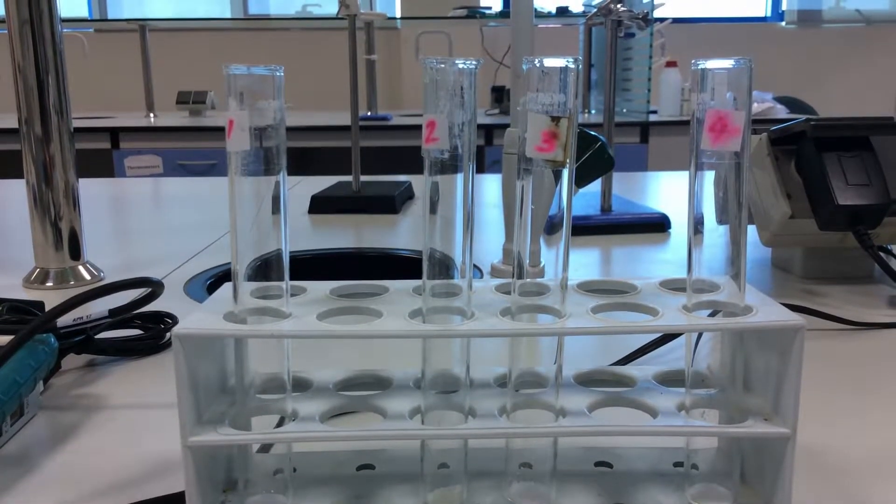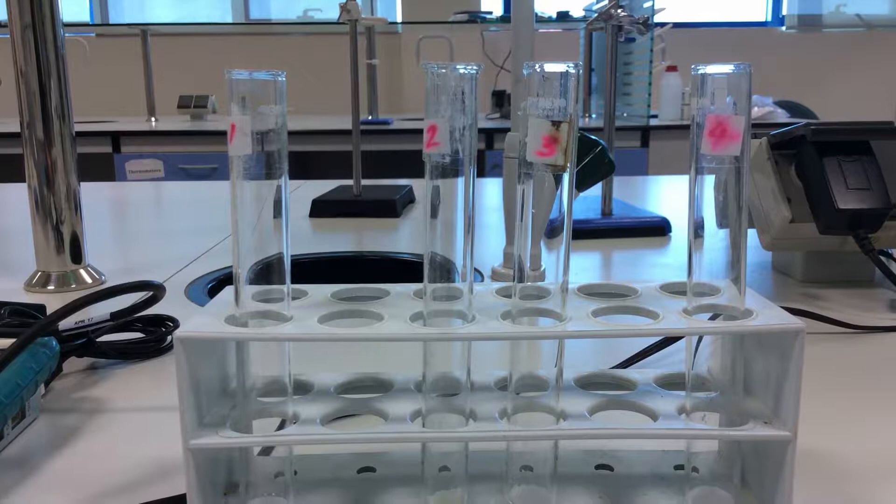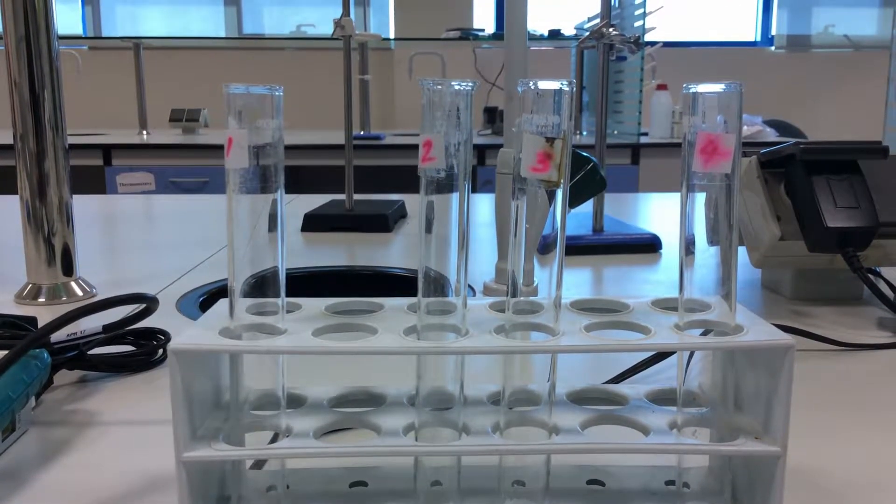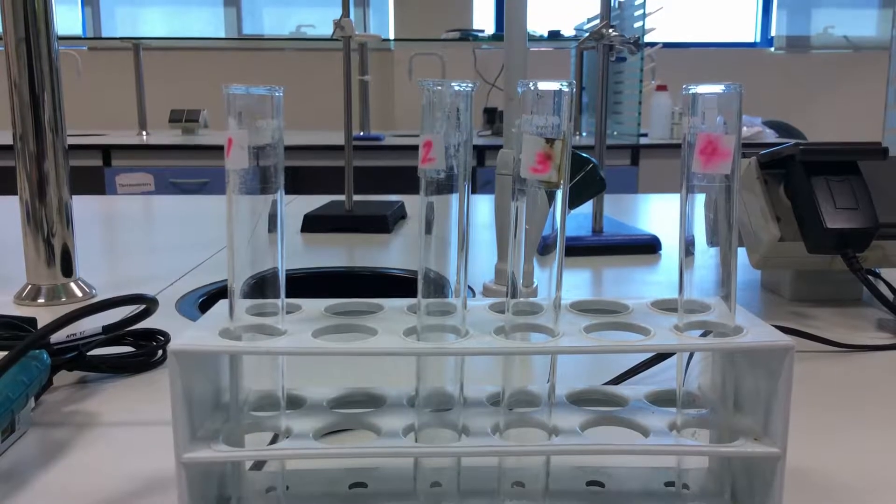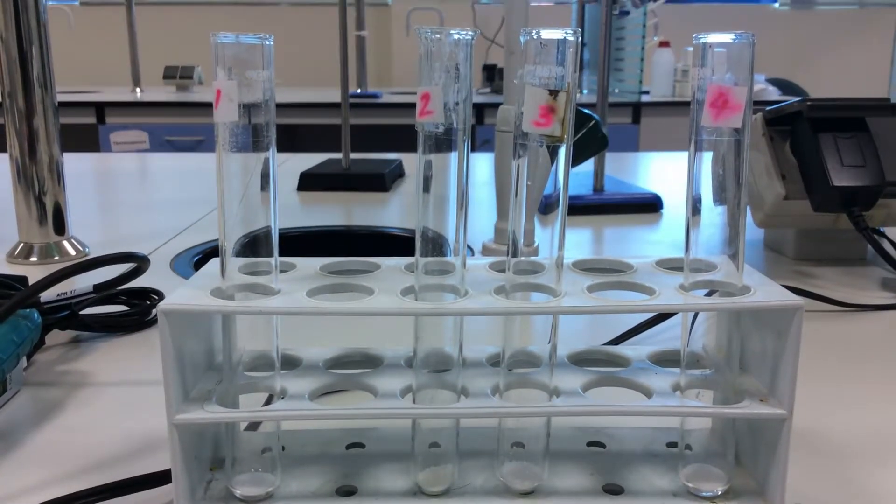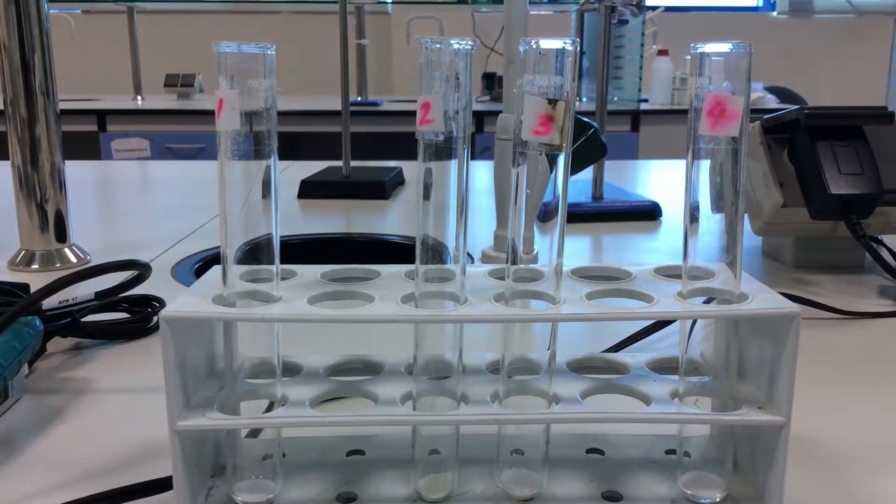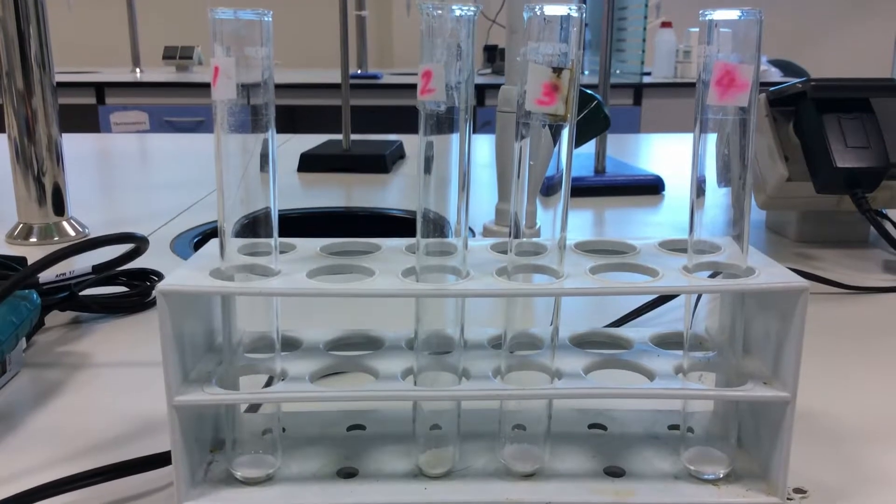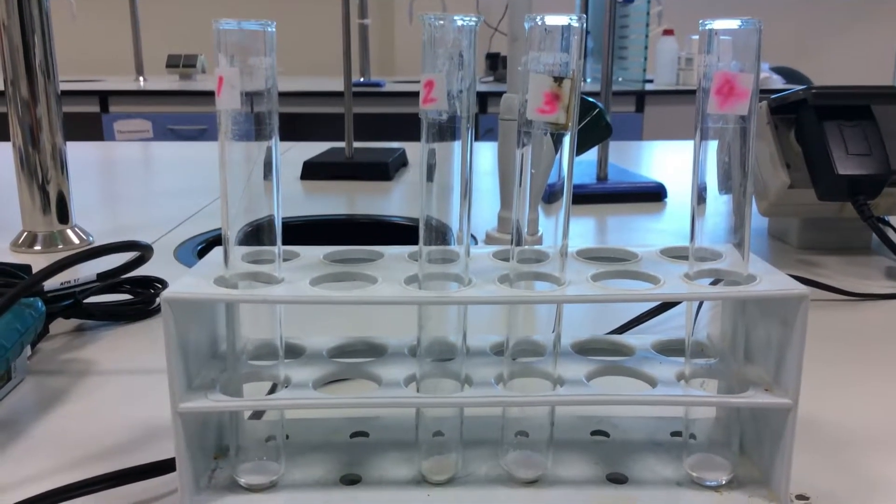In the first part of our experiment, I am showing here four test tubes. The first test tube is filled with sodium chloride (NaCl), the second one is filled with starch, the third test tube is filled with magnesium sulfate, and test tube number four is filled with glucose.